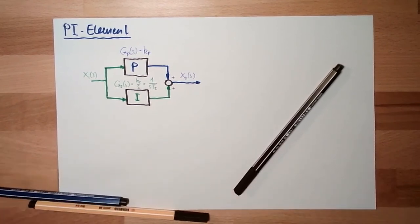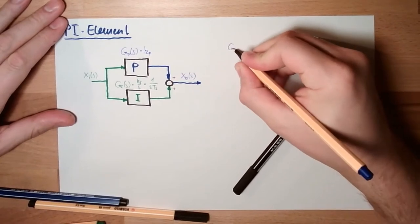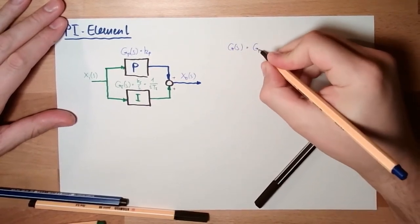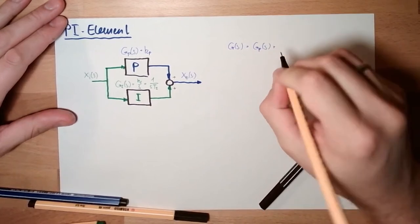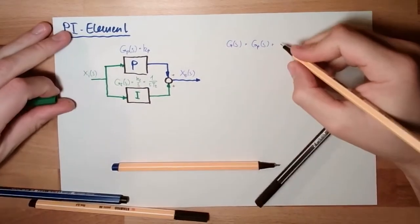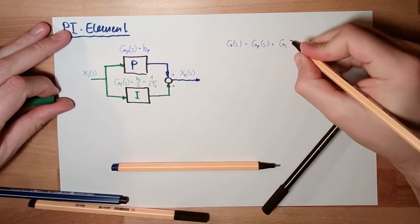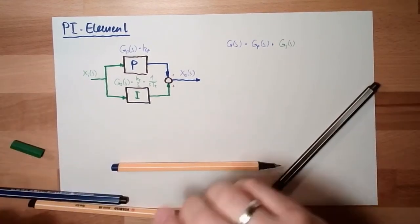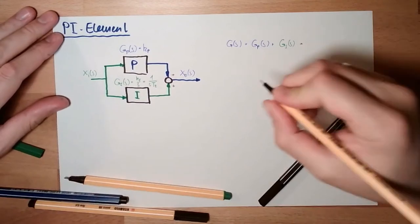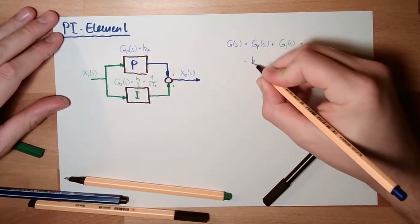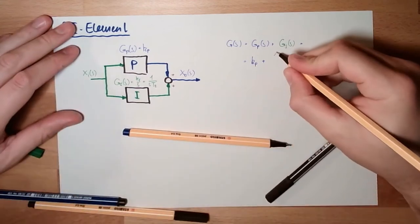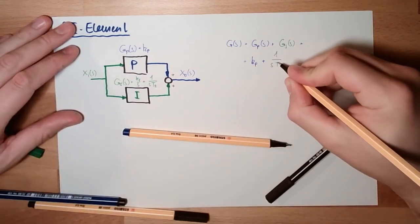So what is the total transfer function G from s? It is Gp from s plus Gi from s. So this is kp plus 1 divided by s·ti. This is one standard representation.